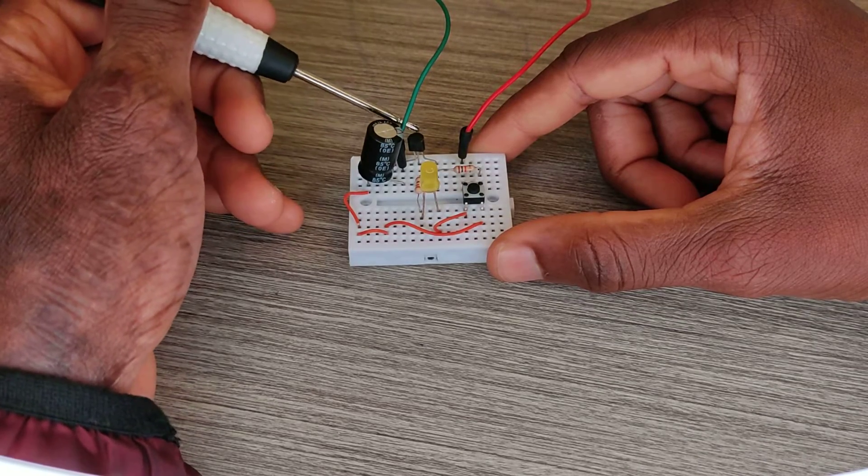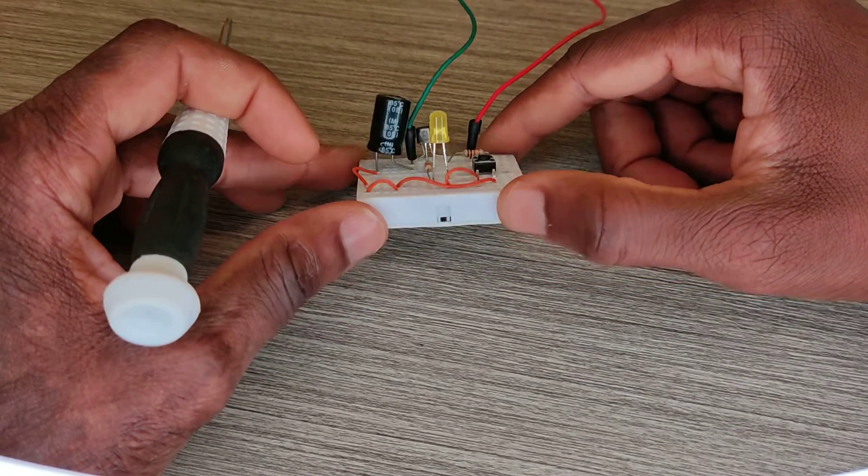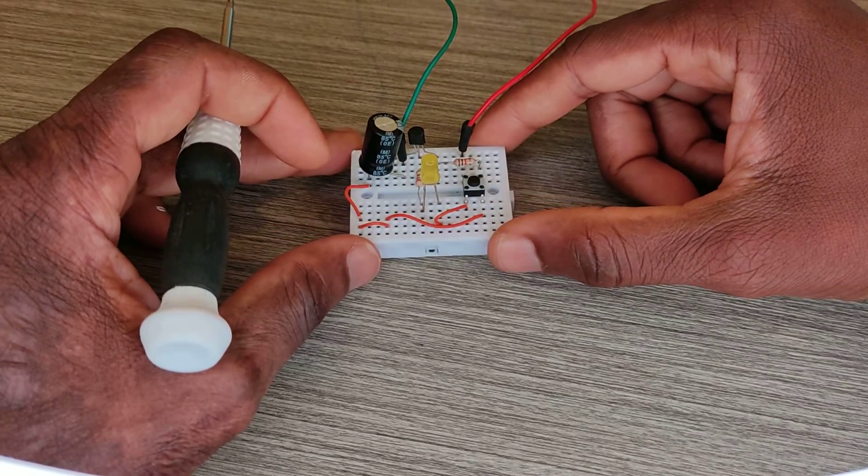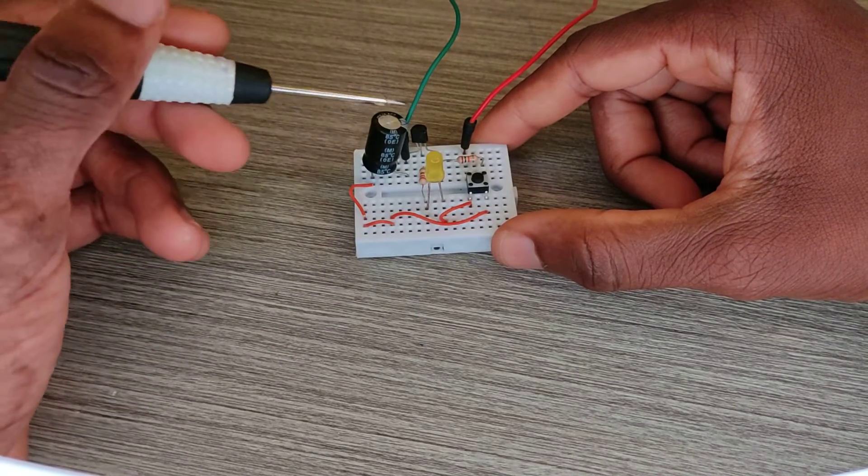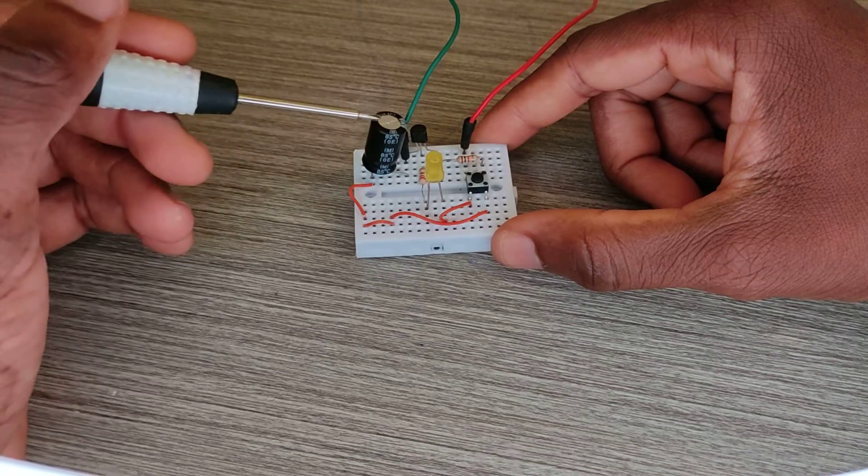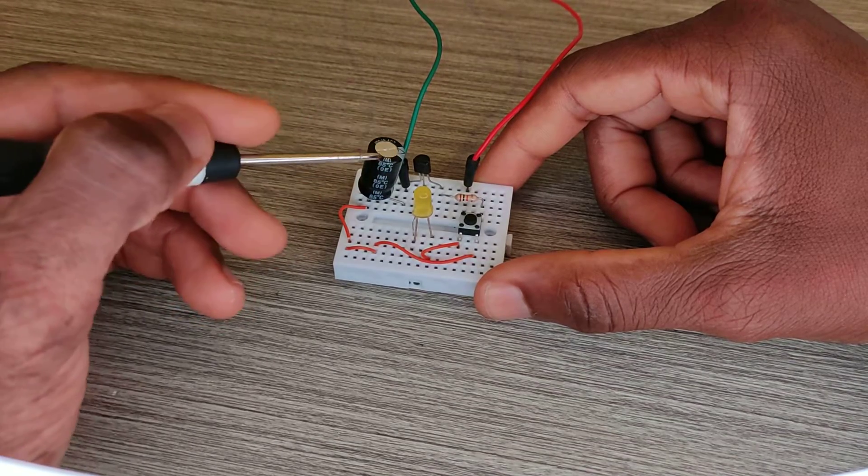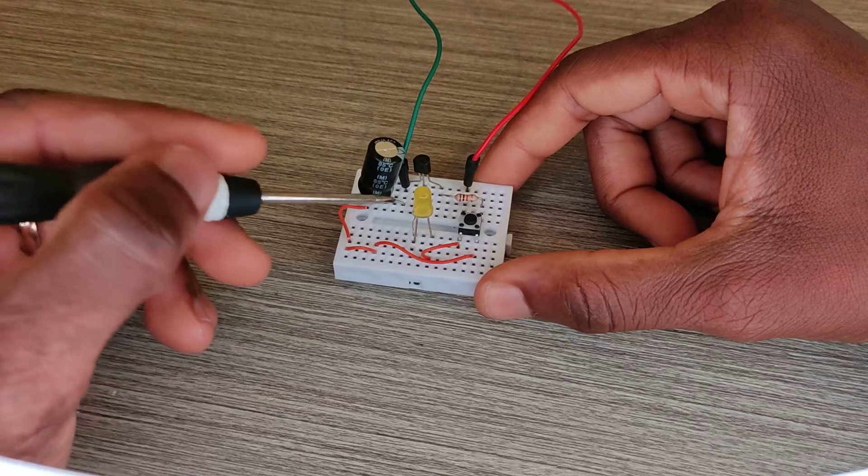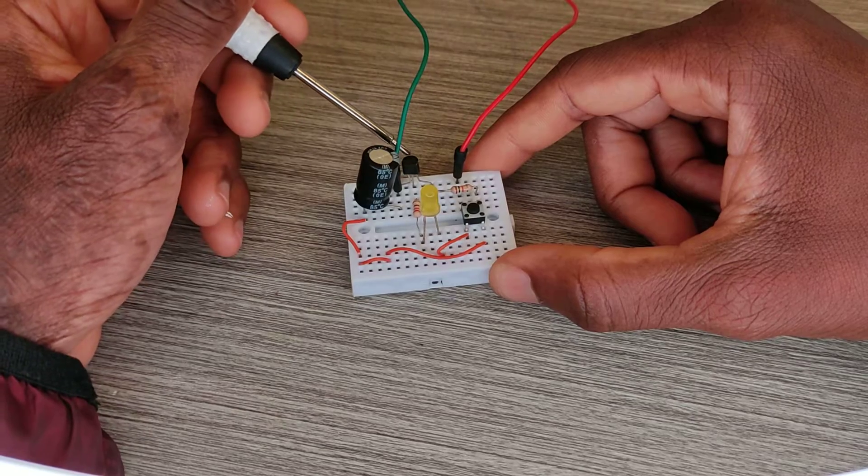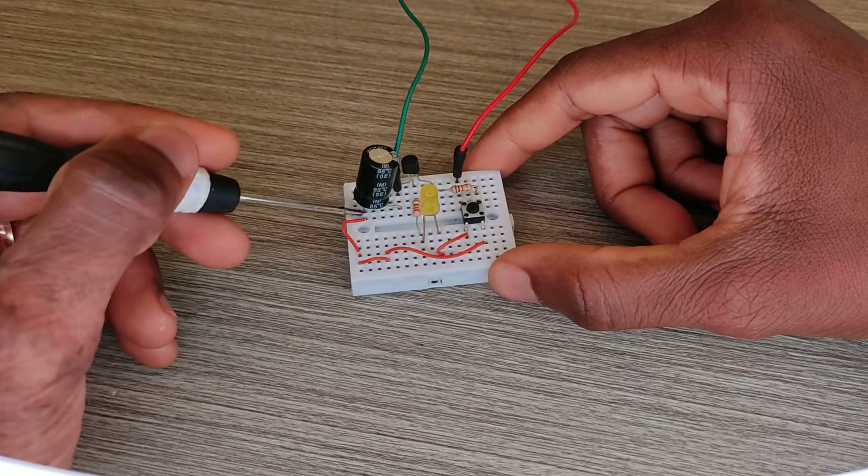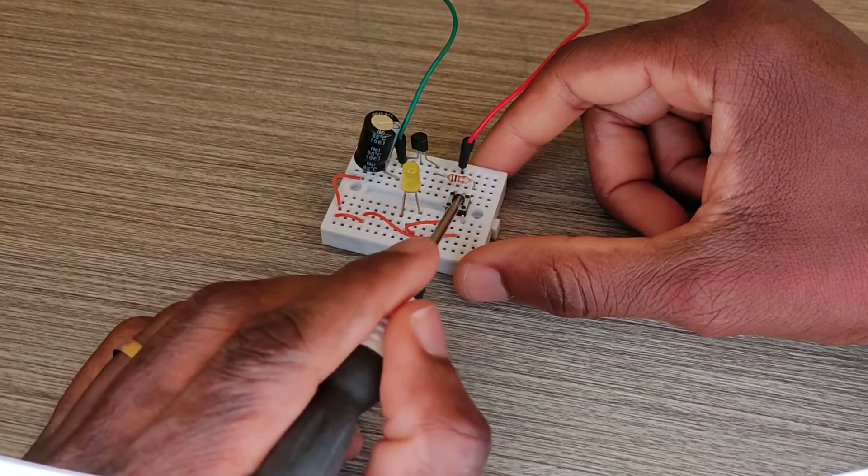Okay guys, so now I'm going to introduce my components that I've got to build this project. So here on my left, the 1000 microfarad capacitor - its negative pin is going to the emitter of my transistor, and the positive pin is going all the way to this pin of my push button.